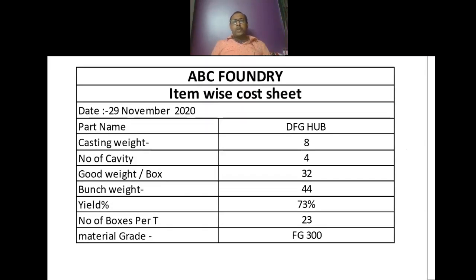Here we are taking the example of a DFG hub from ABC Foundry. Casting weight is 8 kg, number of cavities is 4, good casting weight per box is 32 kg, bunch weight is 44 kg, yield percentage is 73%, number of boxes per ton will be 23, and material grade is FG 300.